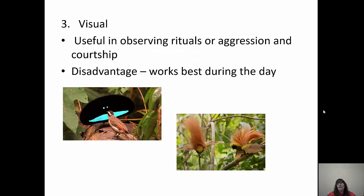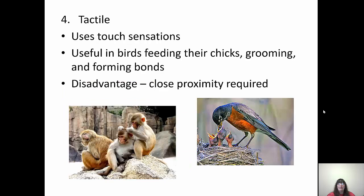Visual communication is useful for observing rituals of aggression and courtship — those are pictures of the birds of paradise, so watch that video. The disadvantage is it only works during the day and organisms have to be close enough to see each other. Tactile communication uses touch sensations — grooming, feeding chicks. The biggest advantage is it helps form bonds between group members. The disadvantage is you have to be in close proximity.